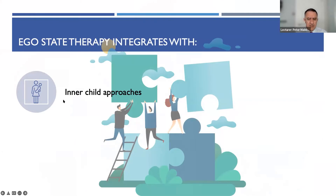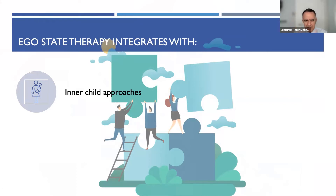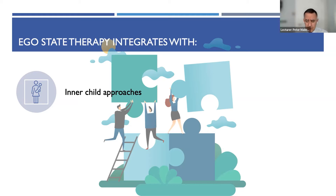Inner child approaches — I love inner child — and you could say that the inner child is an ego state, whether you're looking at it from inner child, from transactional analysis with the parent, adult, child ego states. It could be described as an ego state. And when you're working within that frame, you often find there are several inner children; there are inner teenagers as well. So there is that element that comes in there.